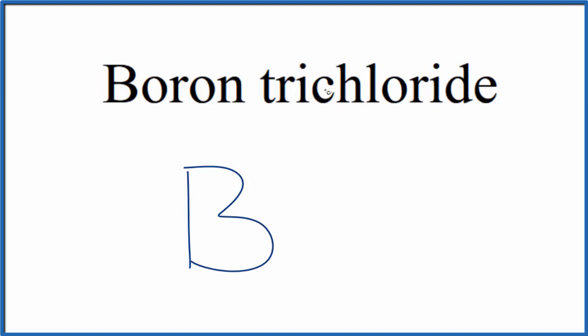Then we have trichloride. Chloride, that's from chlorine. So we'll write our Cl. And then the tri, that prefix, that means we have three chlorine atoms. So the formula for boron trichloride is BCl3.